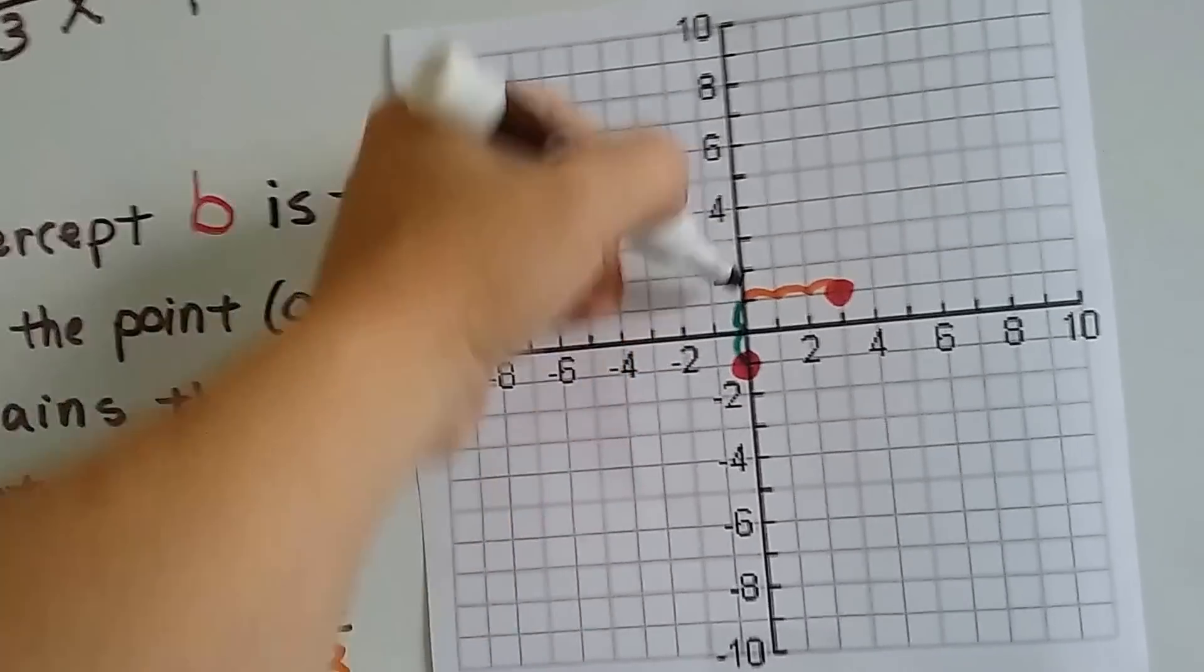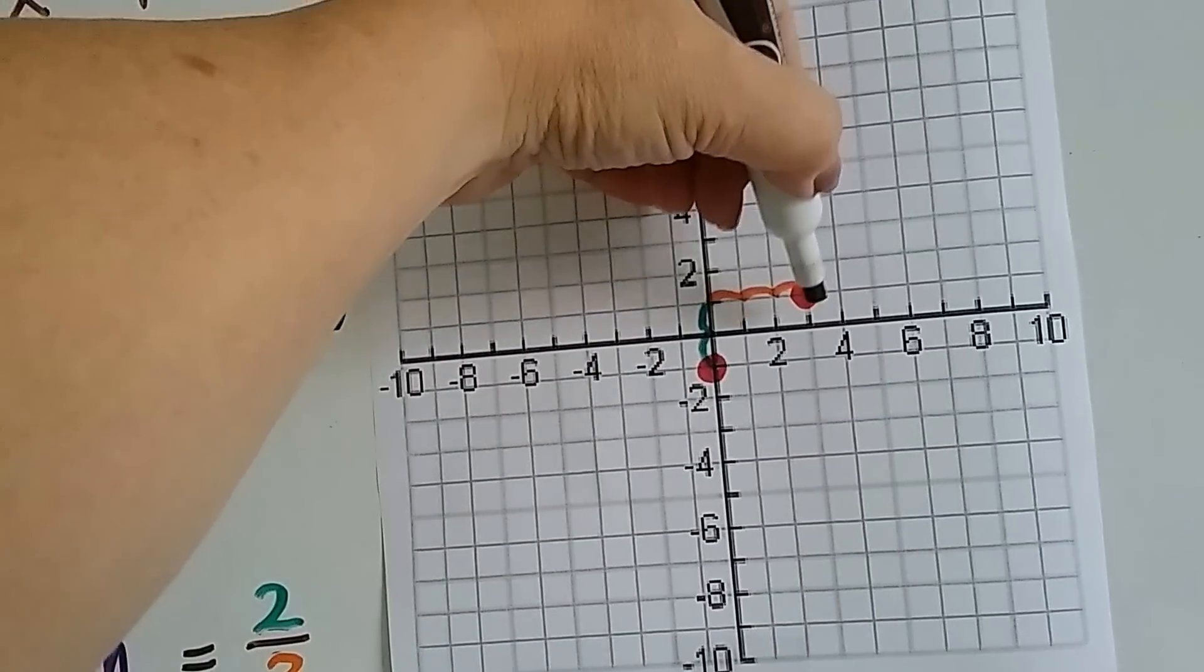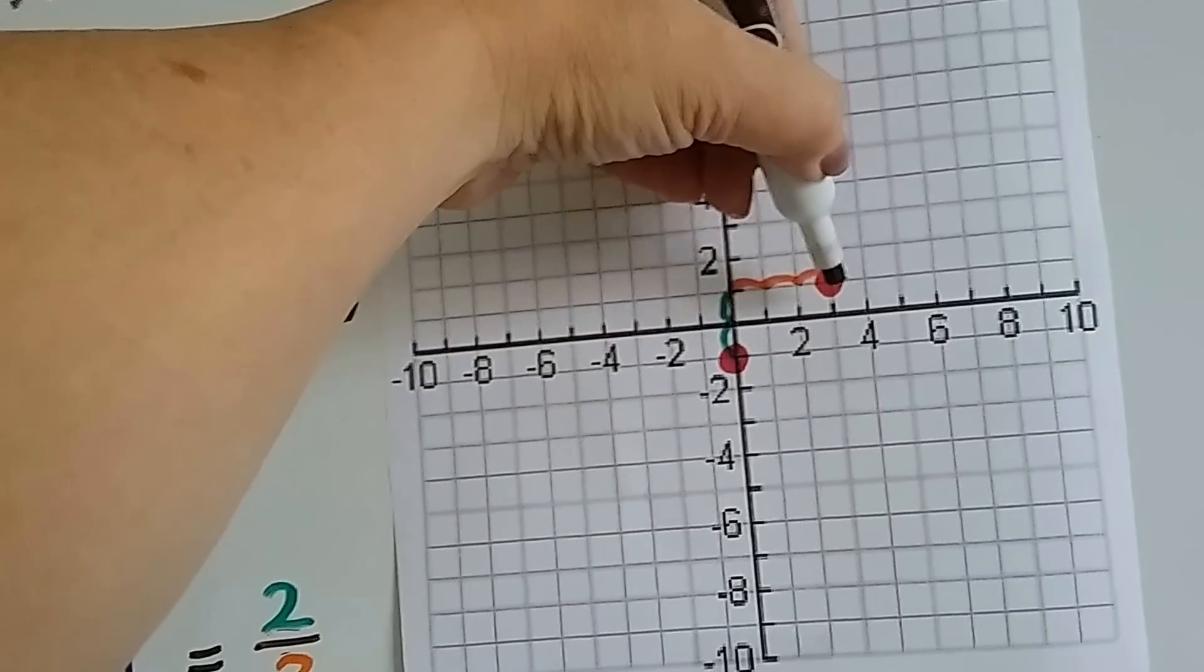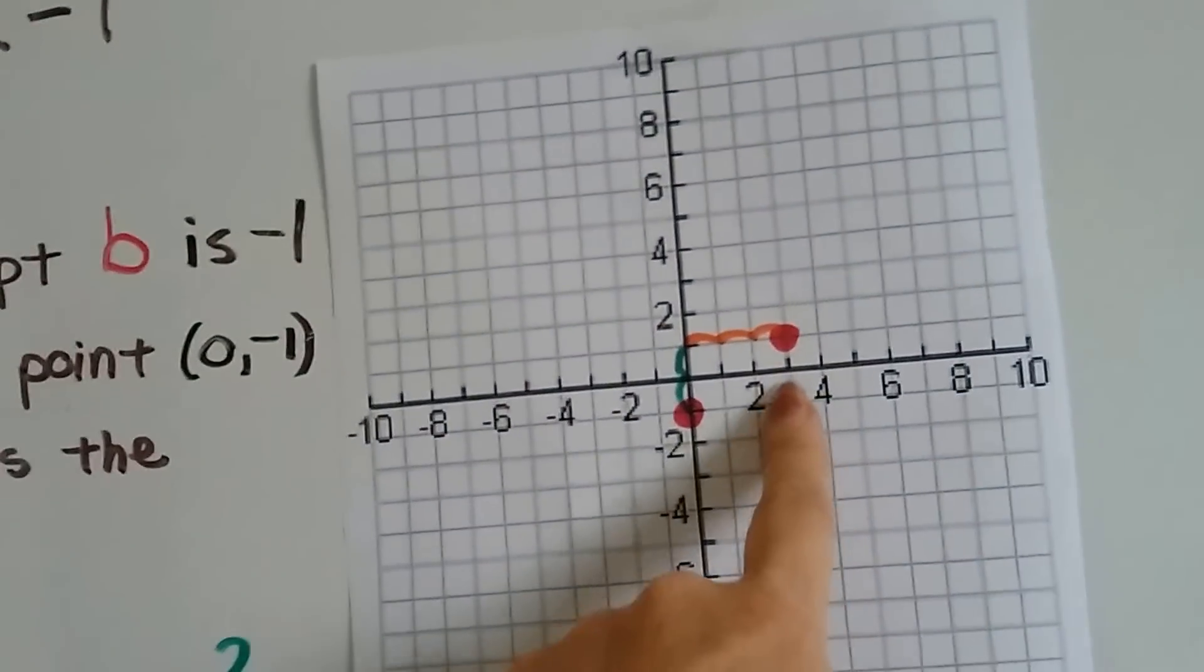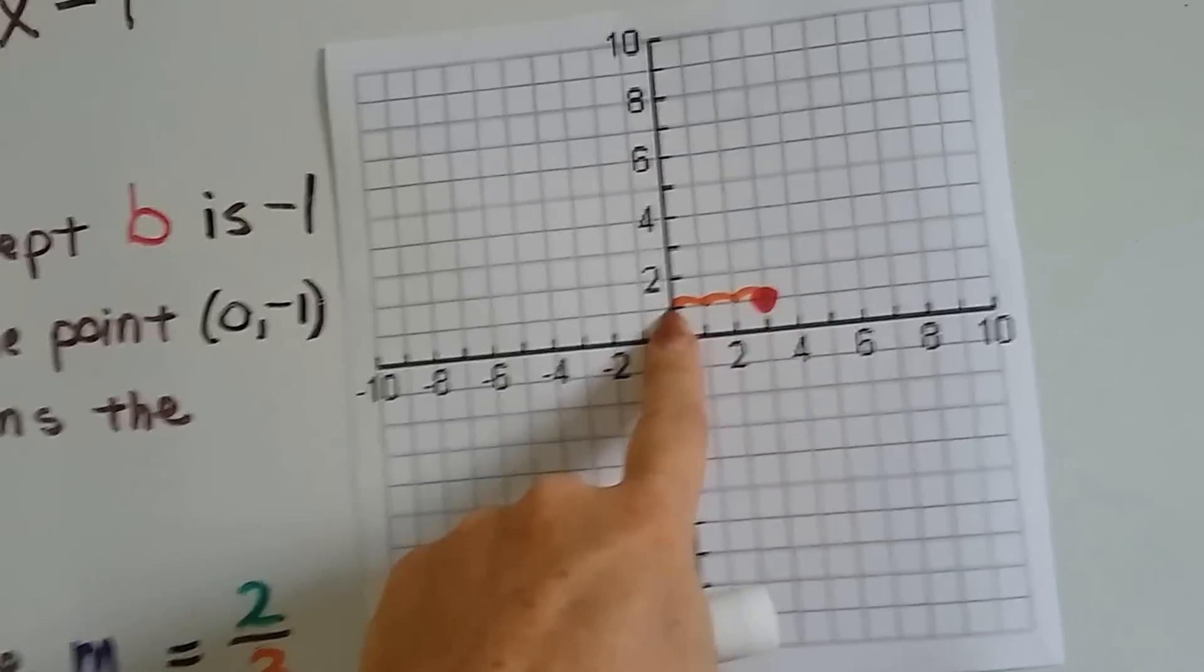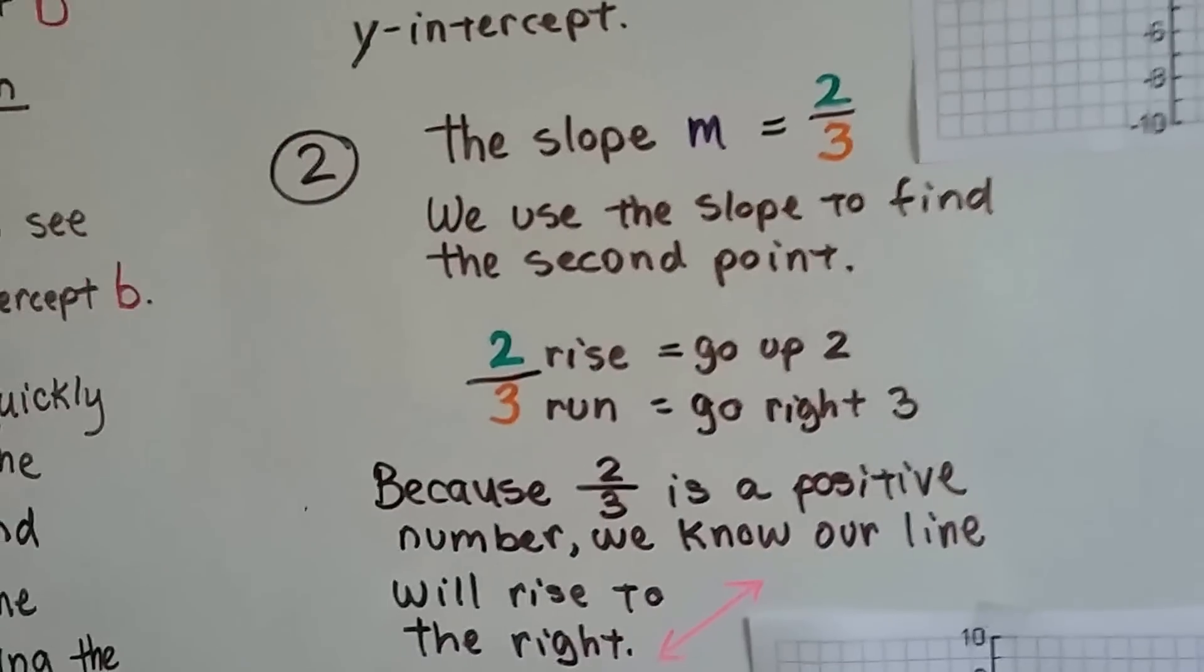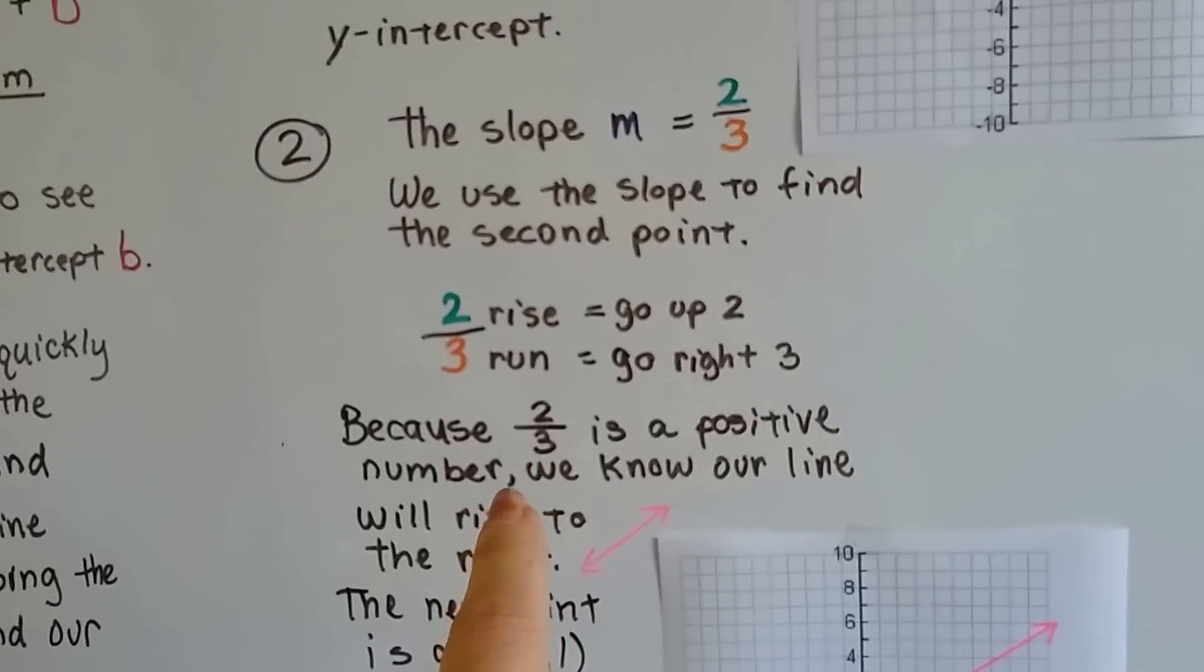So we go up by 2, 1, 2, and then we do our horizontal run, 1, 2, 3. And that means our point is going to be right here. So for x, it's on the 3, and for y, it's on the 1.